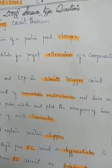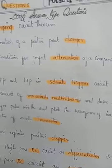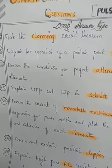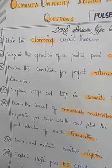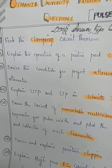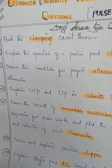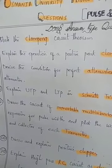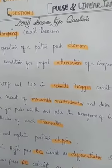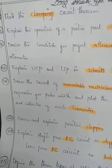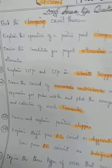The fourth question is: explain the UTP and LTP in Schmitt trigger circuitry. You have to explain the Schmitt trigger circuit, covering the Upper Trigger Point and Lower Trigger Point. Explain those points by drawing the Schmitt trigger circuit.